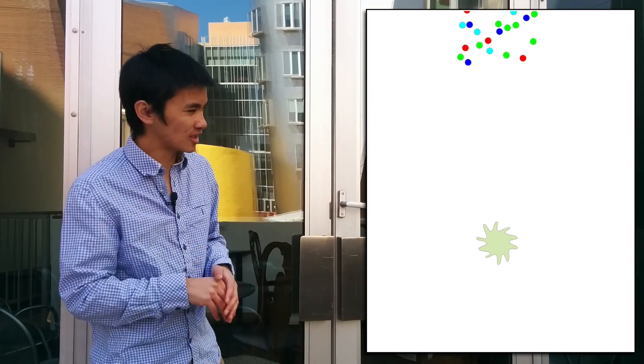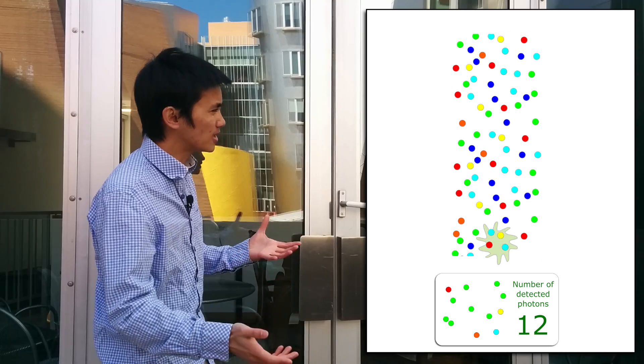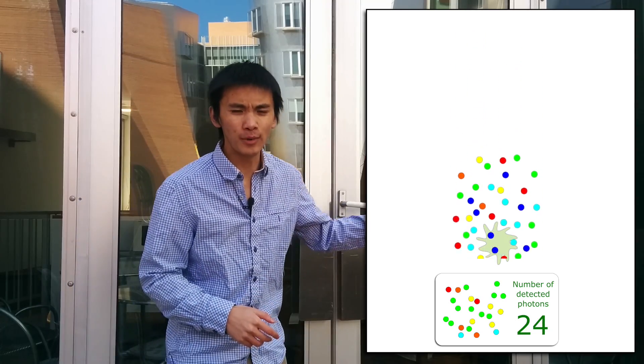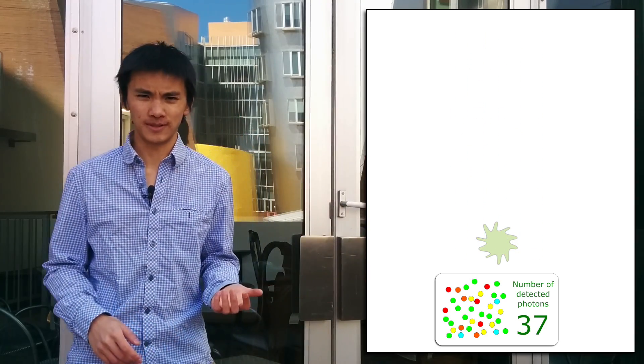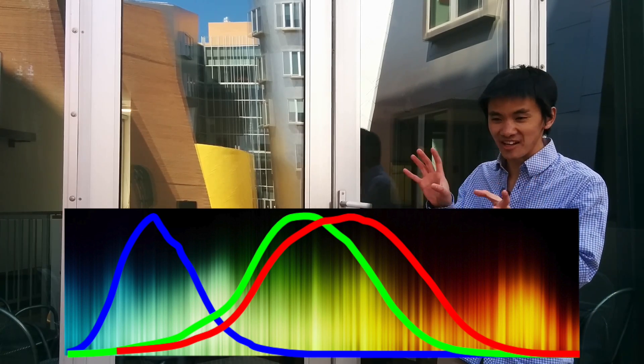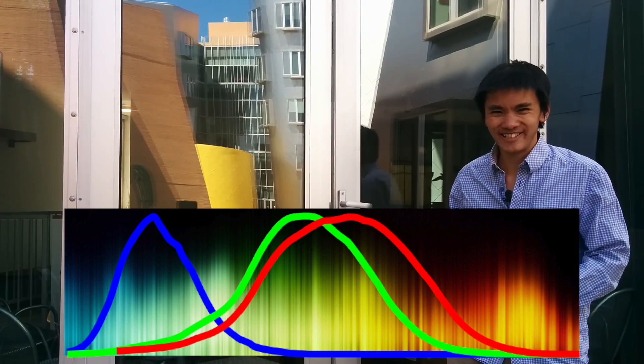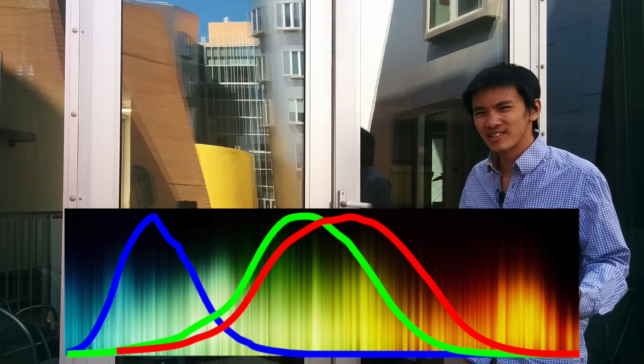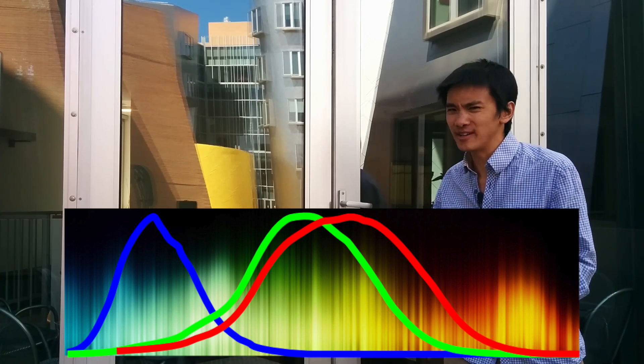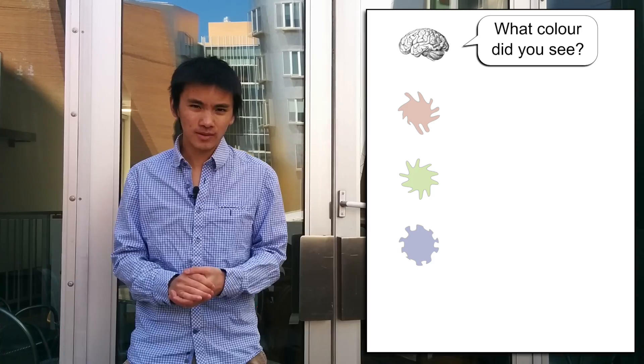For instance, the greenish detector detects mostly green photons, although it does also capture a lot of red photons and yellow photons. In fact, if you compare the range of detection of the greenish and reddish detectors, you see that they are almost identical. So the reddish detector doesn't really detect red. It mostly actually detects orange or something like that.